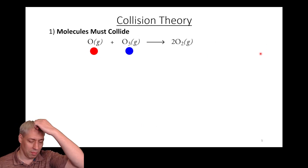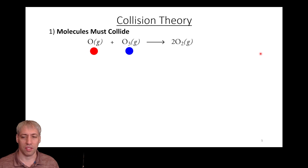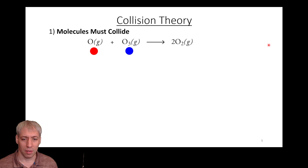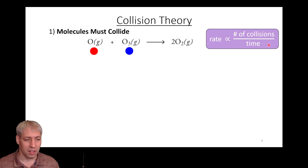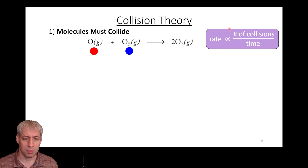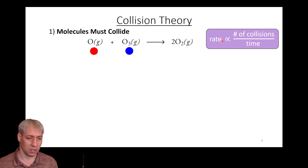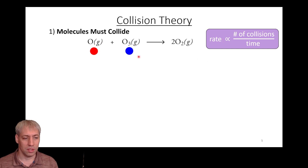For some transformation to occur, molecules must collide with each other. This should seem intuitive, but there are strong implications: the rate of the reaction is dependent on how often they collide. The number of collisions per unit time gives you the rate of reaction, assuming it's a single-step process. So if we're combining oxygen with O3, the red and blue spheres need to collide to eventually make two O2 molecules.